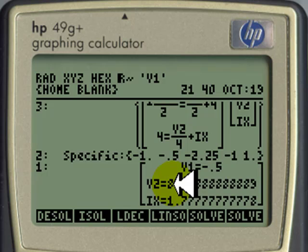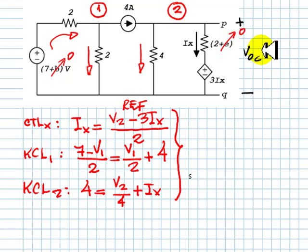V2, which is also our open circuit voltage, is 8.889 volts. And that is also VTH. So we have one down.